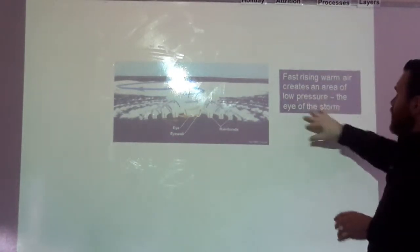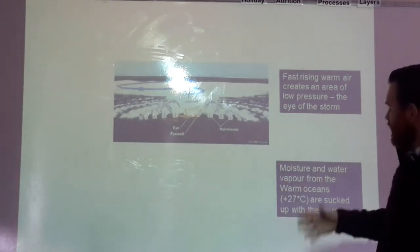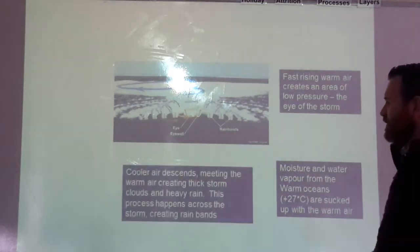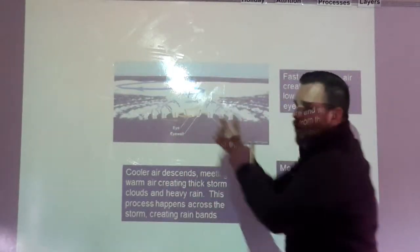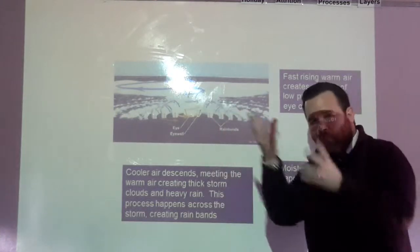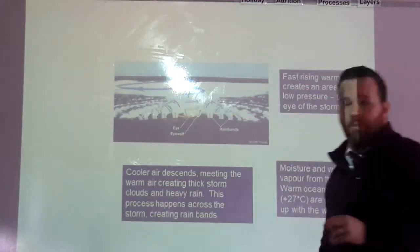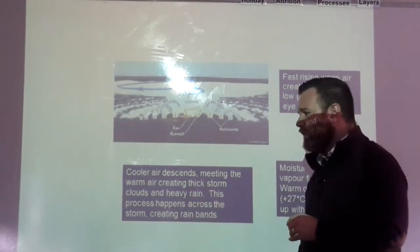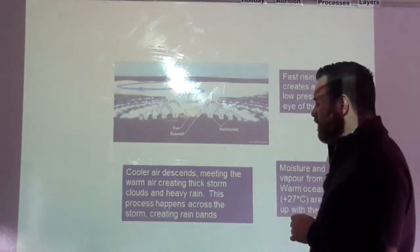That usually creates an area of low pressure, because what happens is that warm air with the moisture is sucked into the atmosphere and it meets cooler air coming down the other way. As that happens, the warm moist air meets the cold dry air, and we get these thick storm clouds — and there's the first part of our tropical storm formation. Our storm clouds give us our heavy rain.